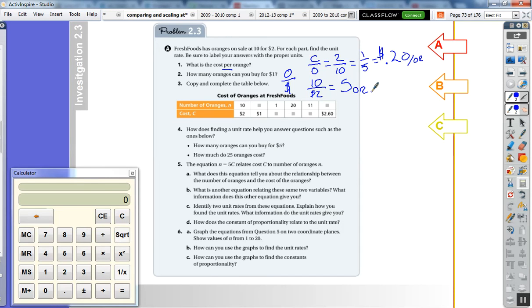Copy and complete the table below. If each orange is worth, well, we already know that's five, right? So one orange is 20 cents, we already learned that.